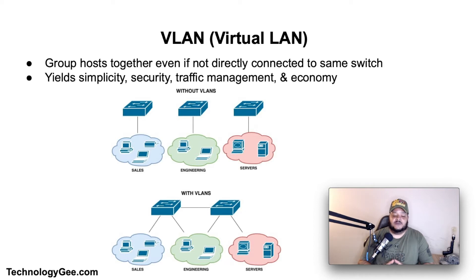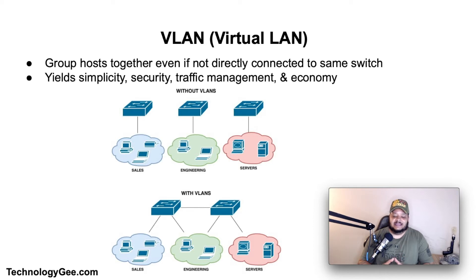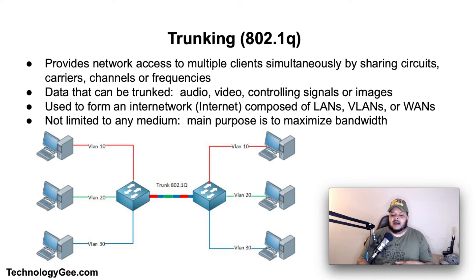This managed sharing yields gains in simplicity, security, traffic management, and economy. For example, a VLAN can be used to separate traffic within a business based on individual users, groups of users, their roles, or traffic characteristics. Many internet hosting services use VLANs to separate customers' private zones from one another, allowing each customer's servers to be grouped in a single network segment no matter where the individual server is located within the data center. Some precautions are needed to prevent traffic escaping from a given VLAN, which is also an exploit known as VLAN hopping.